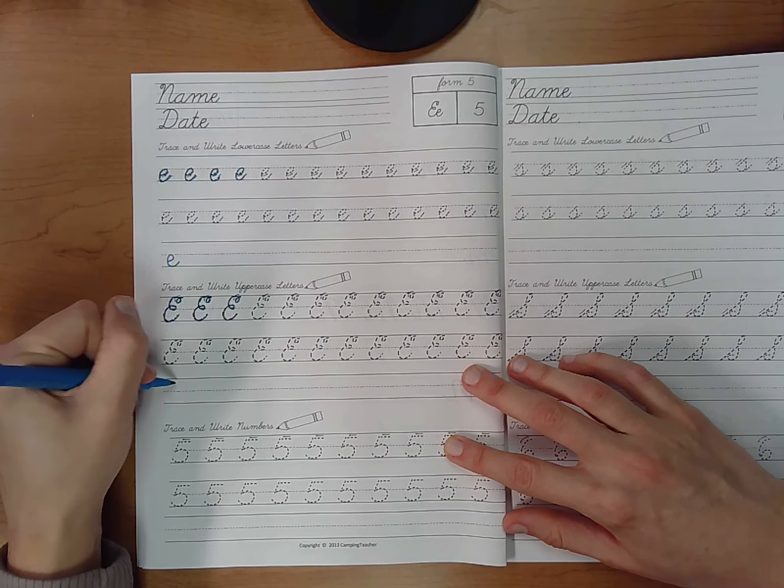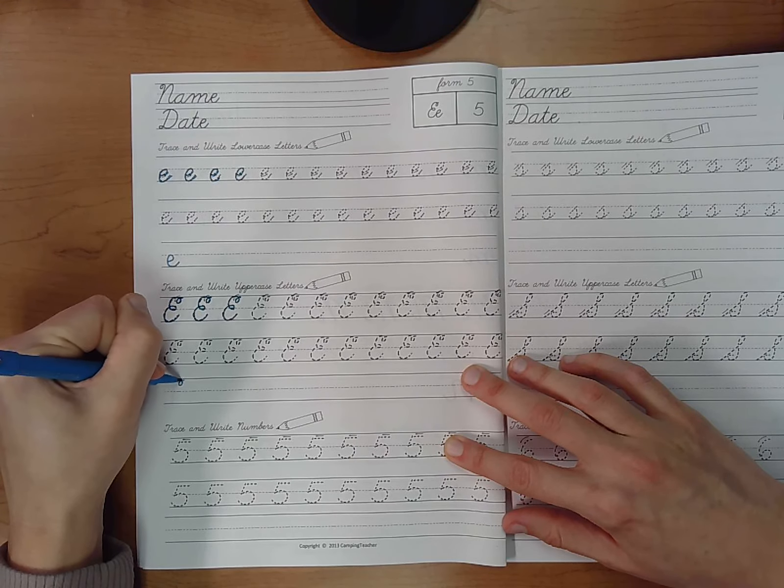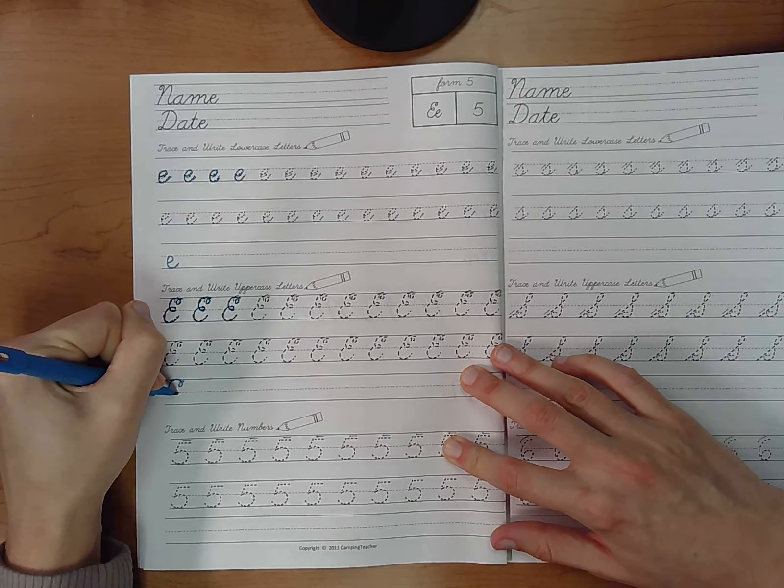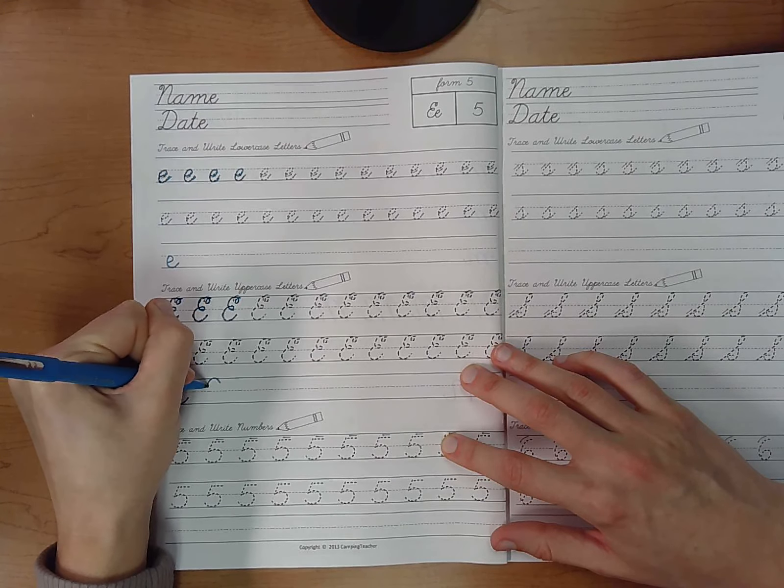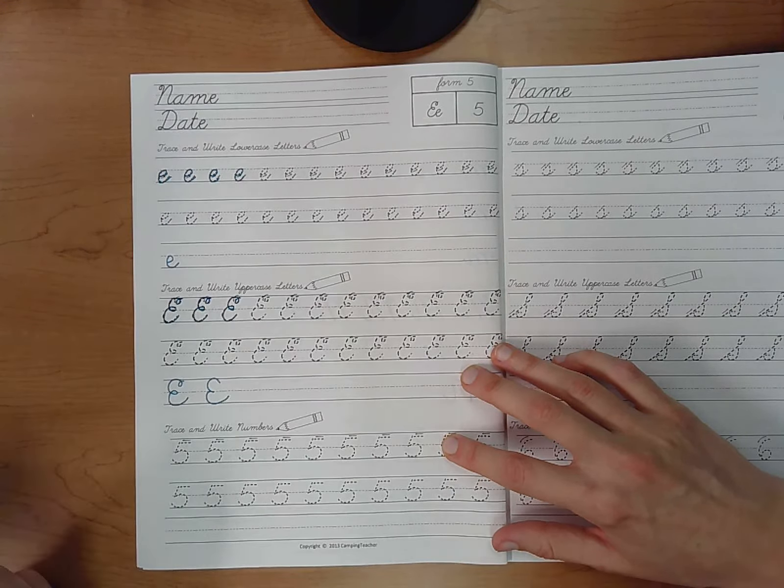When you get to on your own you can do the E like this with all of the curls or you could also make it like this. Okay? You could do either of those. Then go ahead and practice writing your Es.